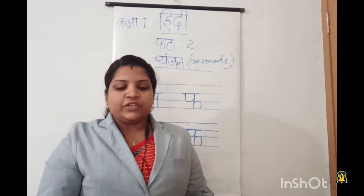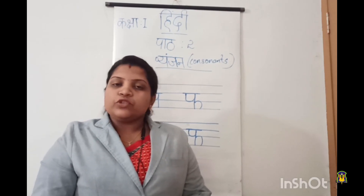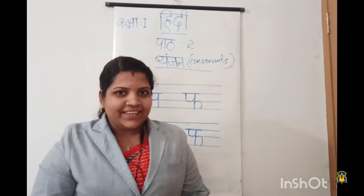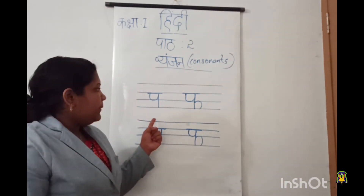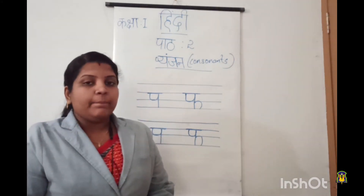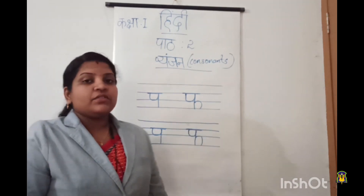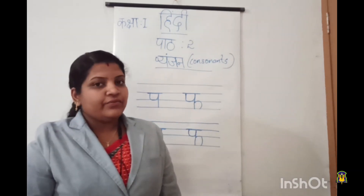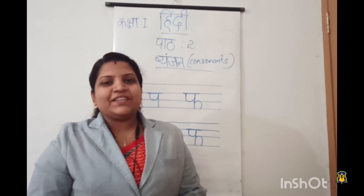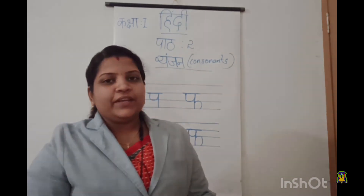So children, let me conclude. Today we learned the first two letters of pa work. The first letter is pa — pa say patang, patang means kite. The next one is fa — fa say fal, fal means fruits. Okay children, that's all for today. Thank you.